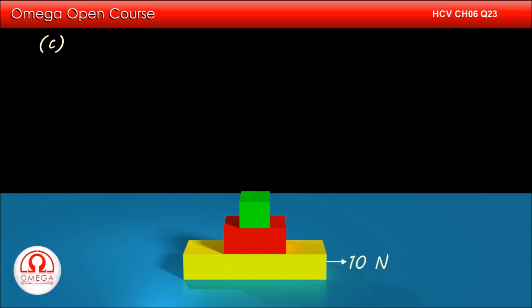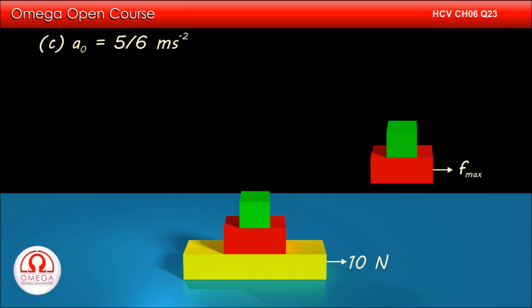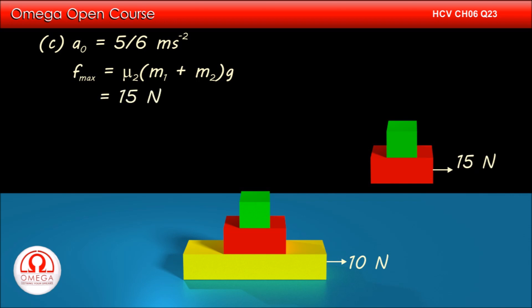In part C of the question, the force is being applied to the bottommost block. If all the blocks move together, their common acceleration is 10 by 12, or 5 by 6 meters per second square. If we take M1 and M2 as a system, the only horizontal force acting on this system is friction between the blocks. The maximum value of this friction is mu2 × (M1 + M2) × g, that is 15N. Since the mass of the system is 5 kg, the maximum possible acceleration of this system is 15 ÷ 5, that is 3 meters per second square.